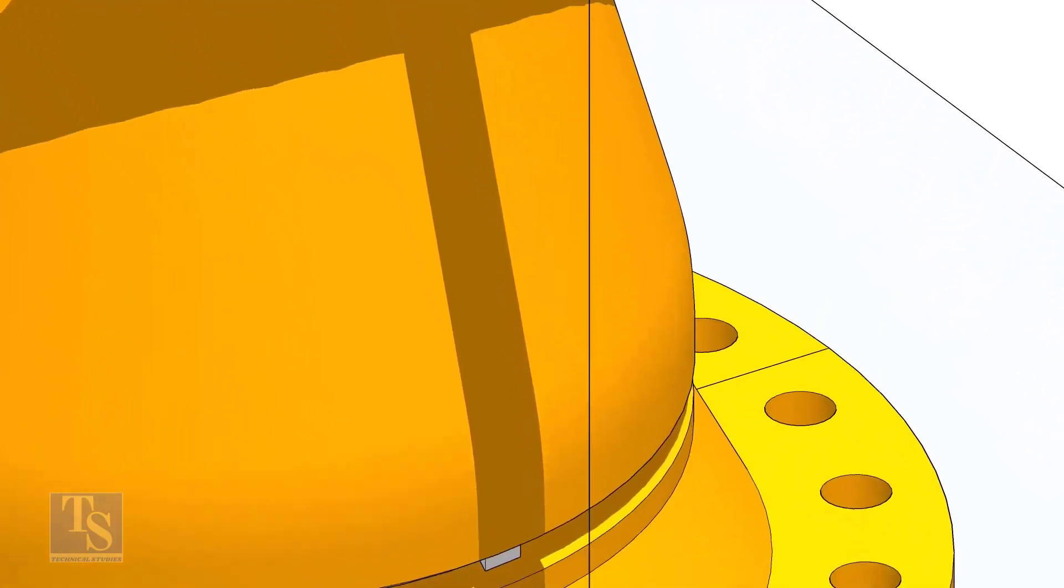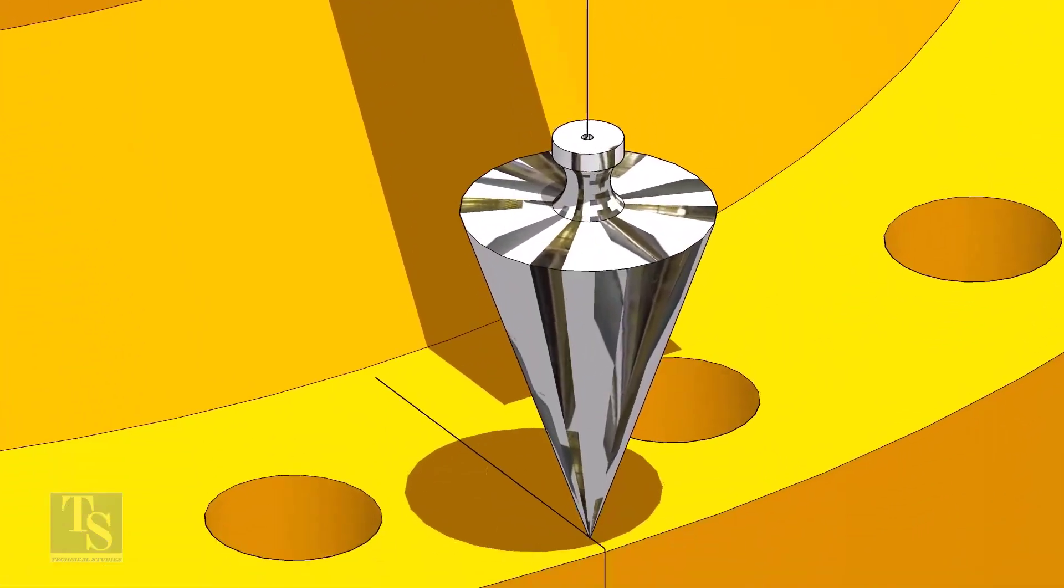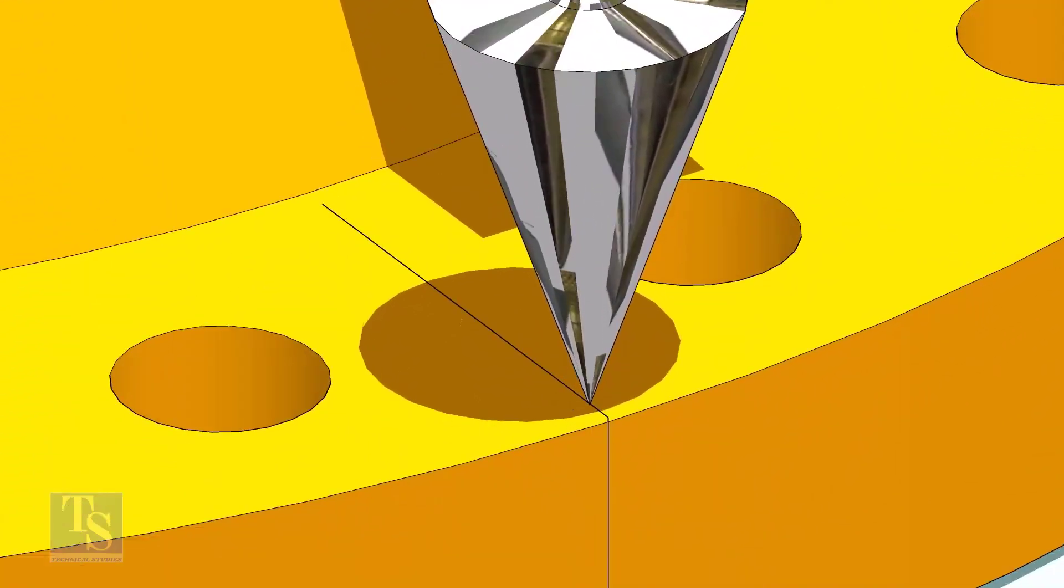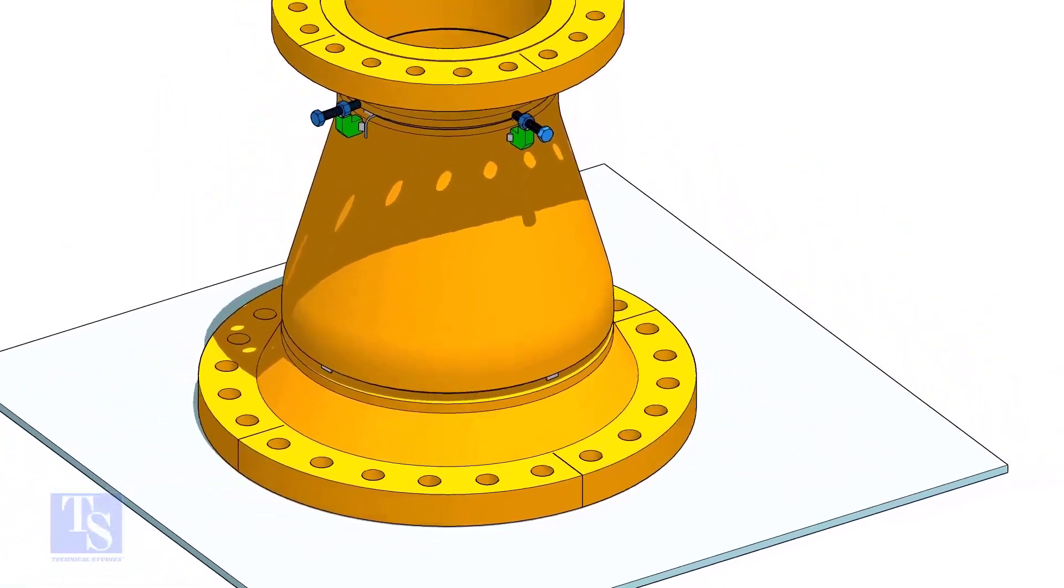Check the plumb of both top and bottom center lines. If the reducer is small in size you can make this alignment with two large right angles.